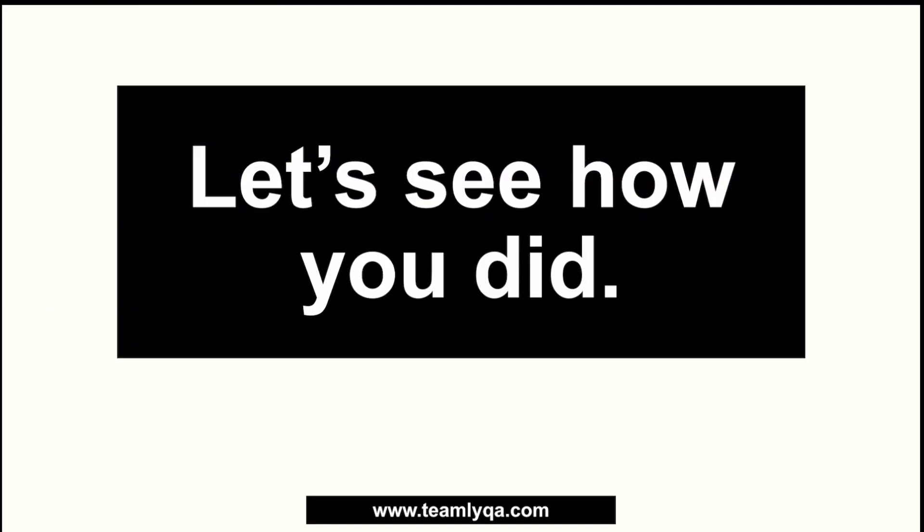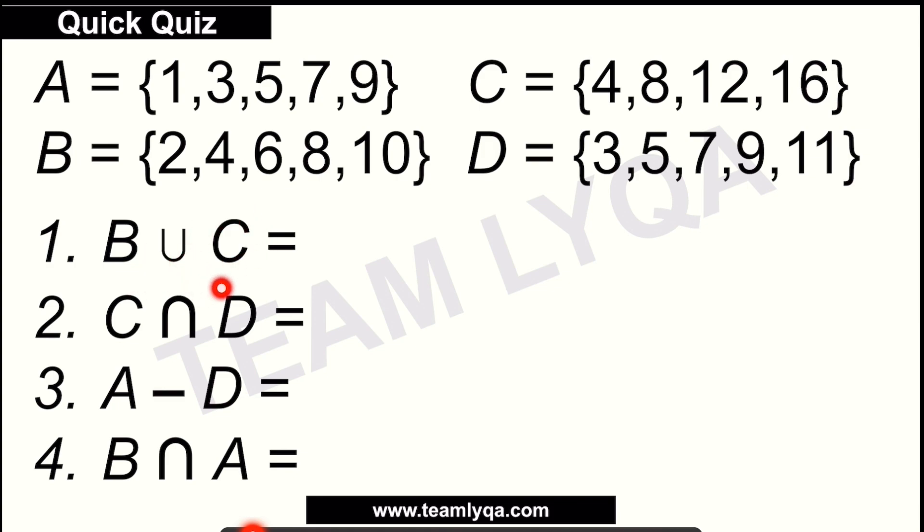Alright, let's see how you did. Number one, you have the union of sets B and C. B union C. So this is B, this is C. Now, if you want to draw a Venn diagram, that's fine too. Now I'll show you if there's no time for that. What I'll do is I'll start with a bracket right away. I will look at what's in B, let me put this in order. Let's start with the smallest number.